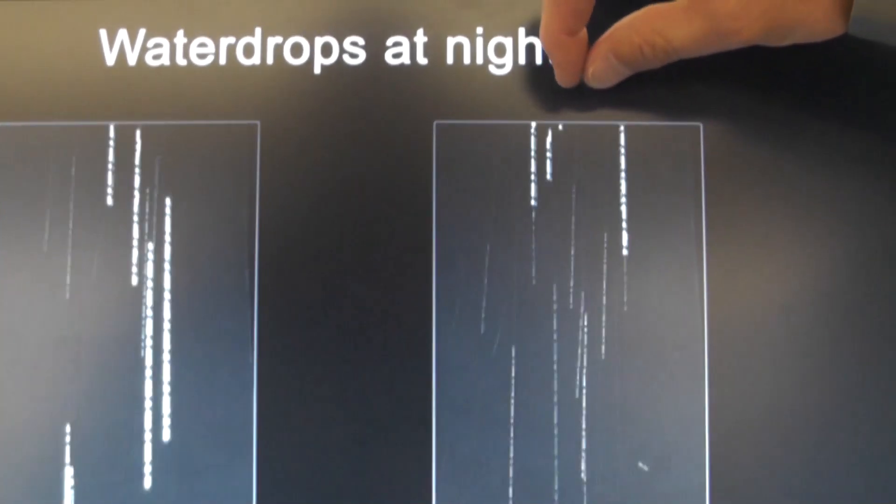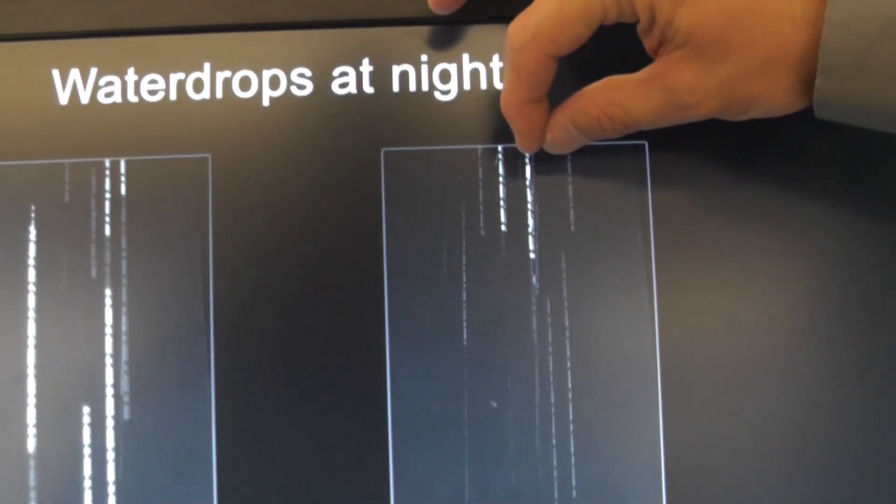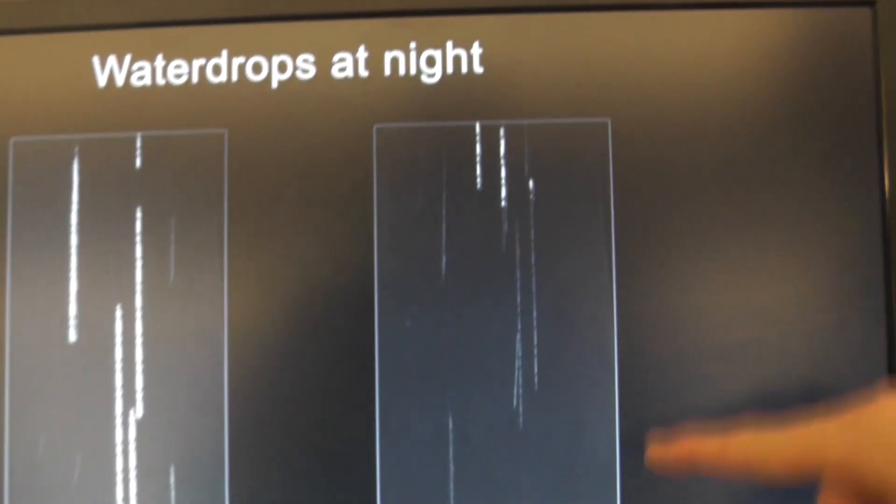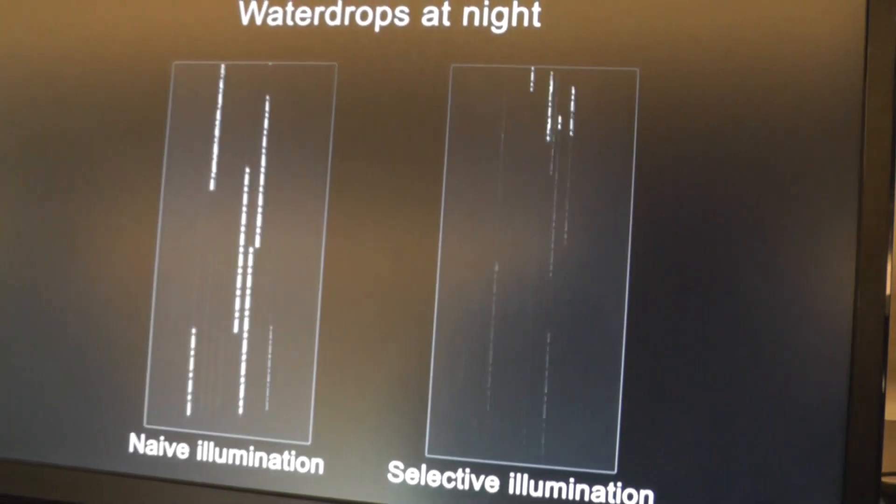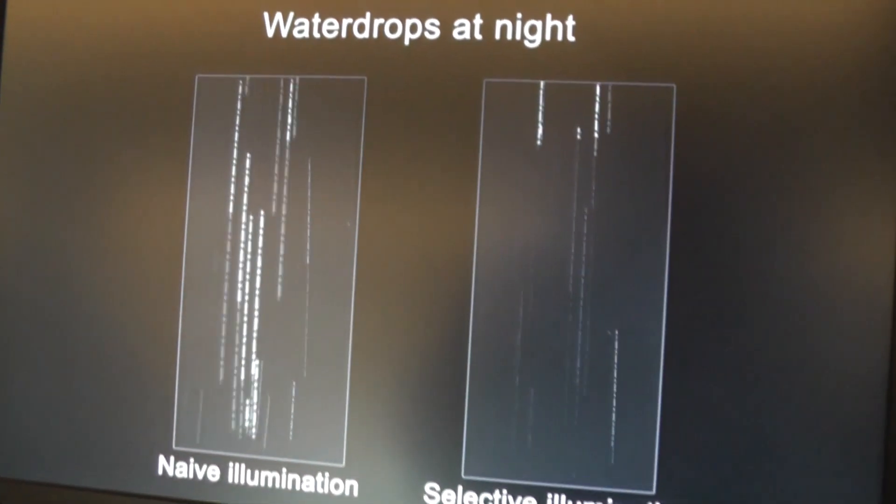You still get that 13 millisecond of time when the system is calculating where those raindrops are. But you can see here that the visibility of the rain is diminished by quite a bit.